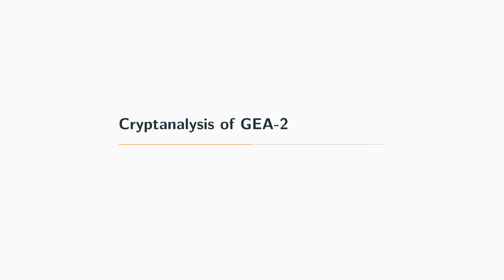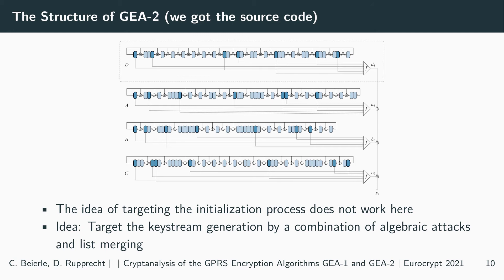Now let me discuss the cryptanalysis of the GEA2 cipher. We obtained the source code of GEA2, and it looks quite similar to GEA1. The main difference is one additional register, LFSR D, making the internal state larger. The idea of targeting the initialization process as we did for GEA1 does not quite work here, because when looking at the joint initialization of two registers, there are many more bits left from the other two registers, making a meet-in-the-middle attack quite expensive.